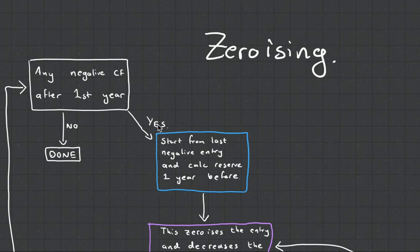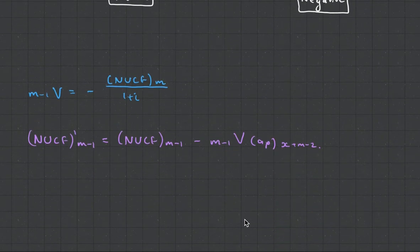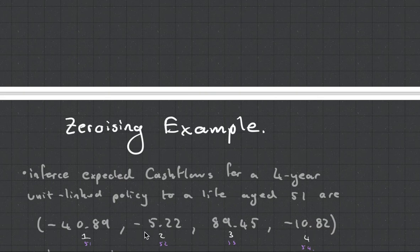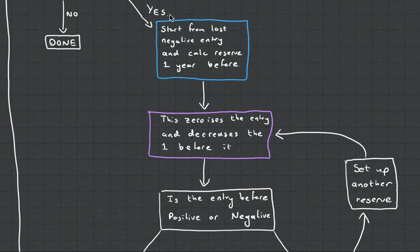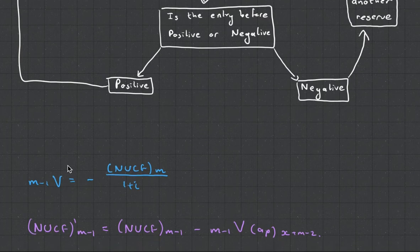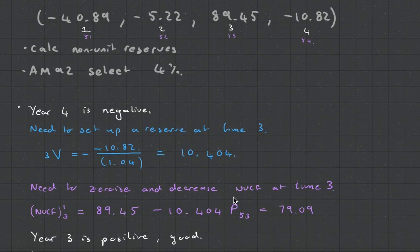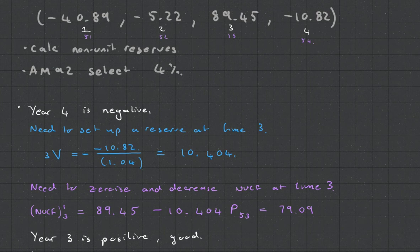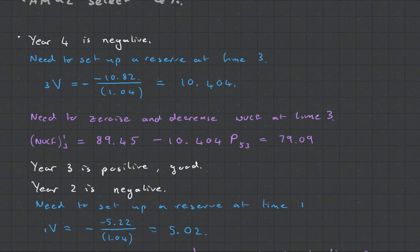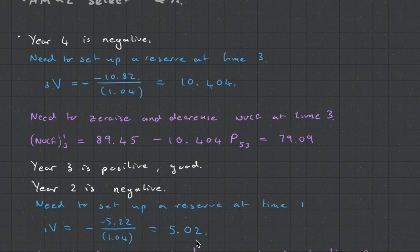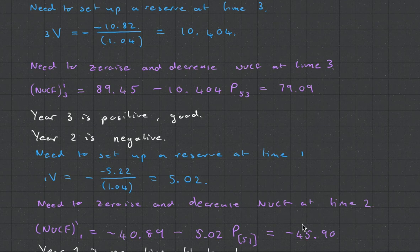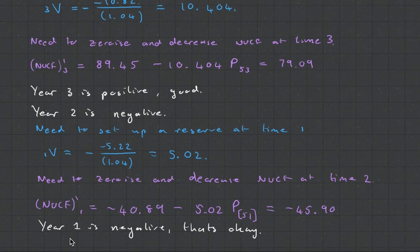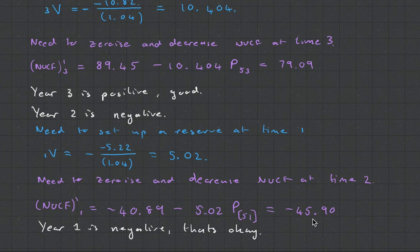Any negative cash flow after the first year? And the answer again is yes, because the second cash flow is negative. So now what we do are the exact same steps. We're going to do the blue, we're going to do the purple, and then we're going to check again with the white. So those are our formulas. In our example, year 3 is positive, so you can see we went good. But year 2 is negative, so we set up another reserve at year 1, which is 5.02. And we then zeroize and decrease the non-unit cash flow at time 2. And at year 1, we get negative 45.90.